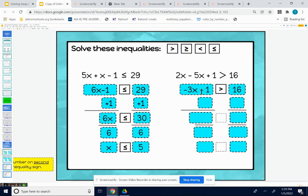Now we need to get rid of the added 1. We're going to do that by subtracting 1 from each side. That leaves us with negative 3x on the left and 16 minus 1 is 15 on the right. The inequality stays the same until the very end when we divide or multiply at the very end.